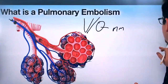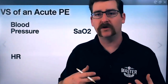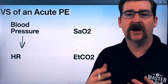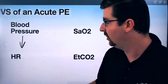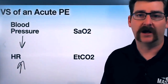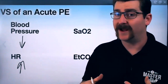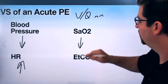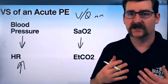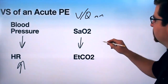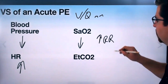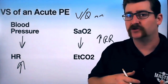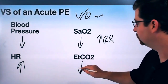So what does that all mean for us as far as vital signs are concerned? Your blood pressure will decrease due to poor return from the lungs to the left side of the heart. Because of that decrease, we'll have a compensatory increase in heart rate. We also have that VQ mismatch, which causes a low SpO2 — a low pulse oximetry reading. Because our oxygen saturation is low, the respiratory rate is going to increase to compensate. And end tidal CO2, because you can't get that CO2 back across, is also going to be low.